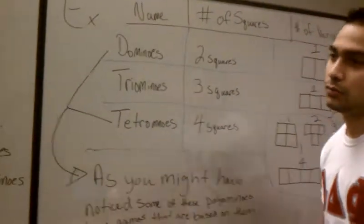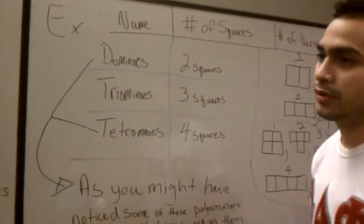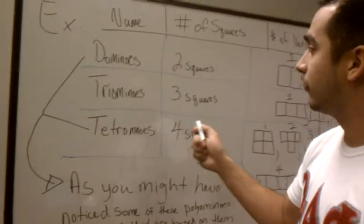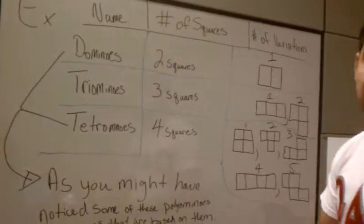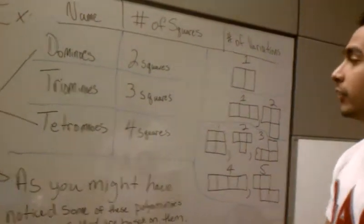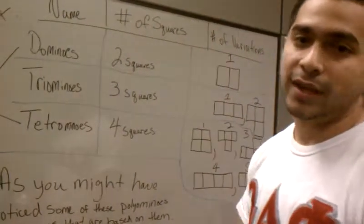You can have your students just use different squares and try combining them. For instance, if you have two squares, just see how many variations you can come up with, or three squares and how many variations you can come up with.